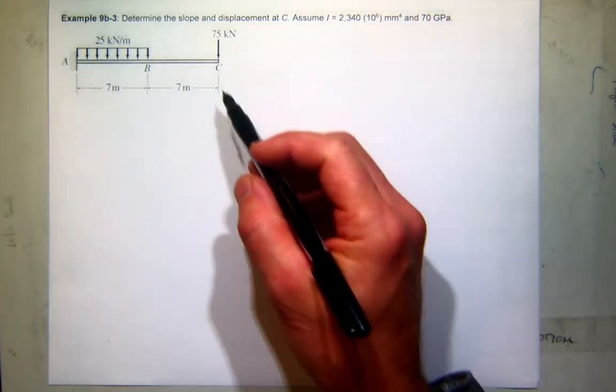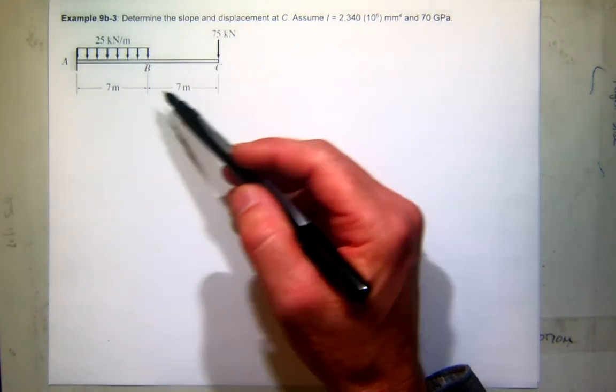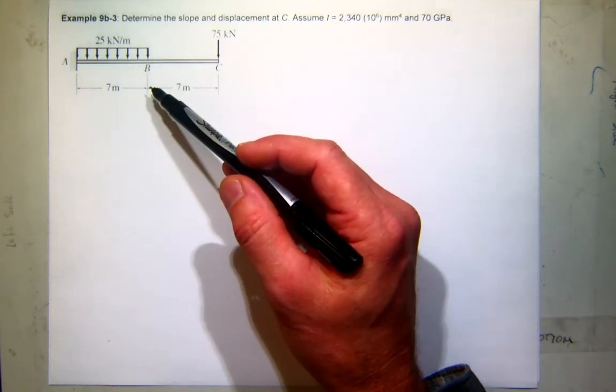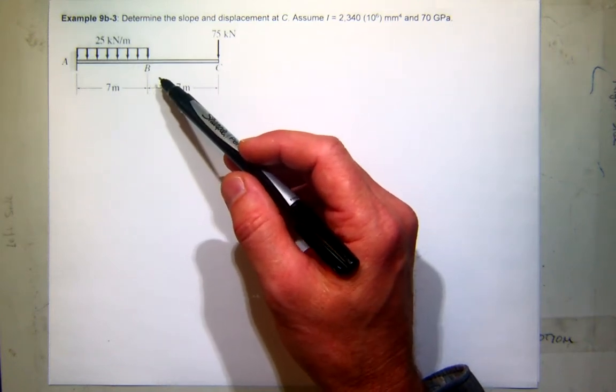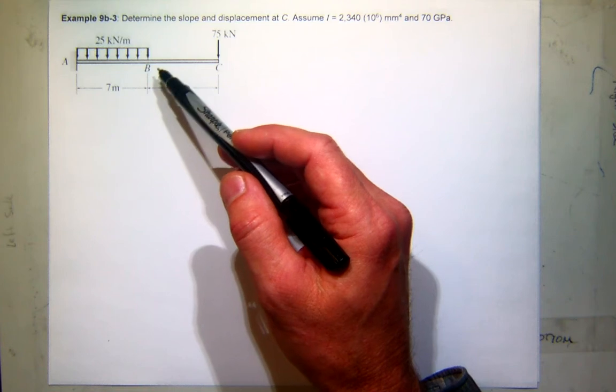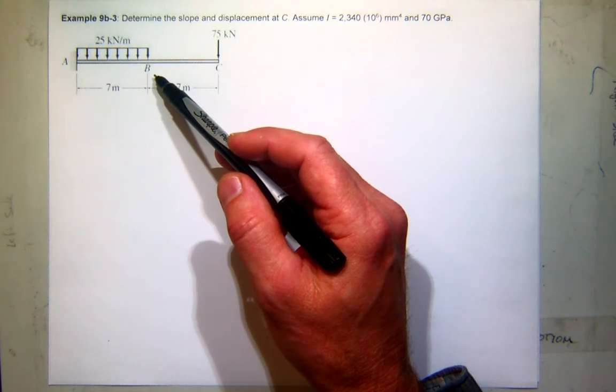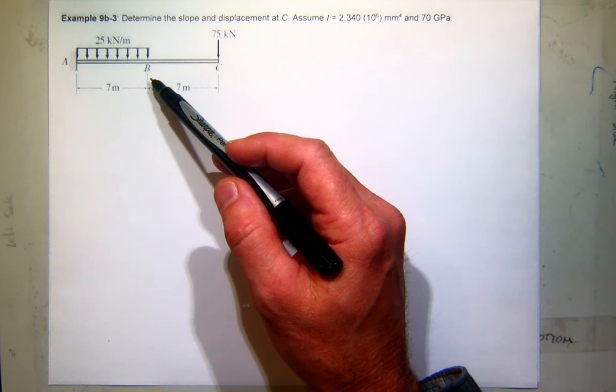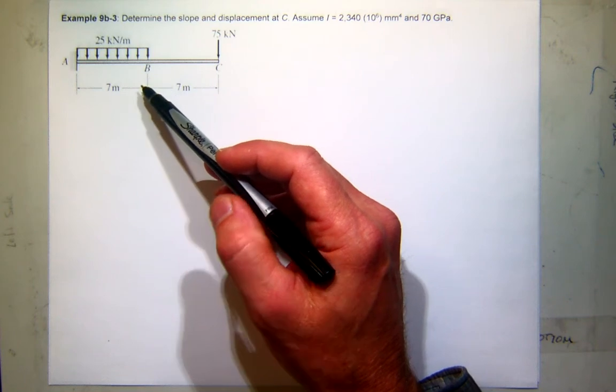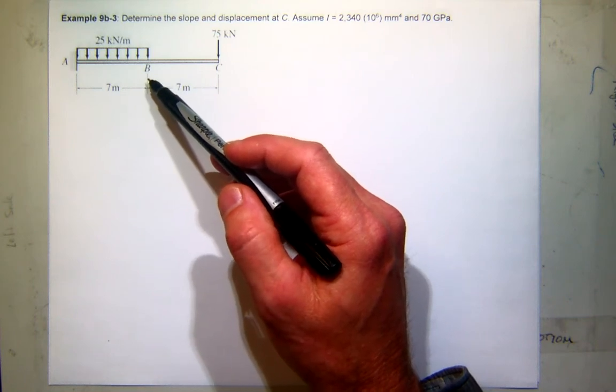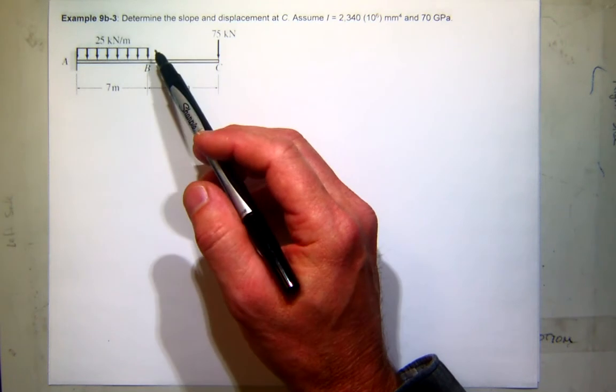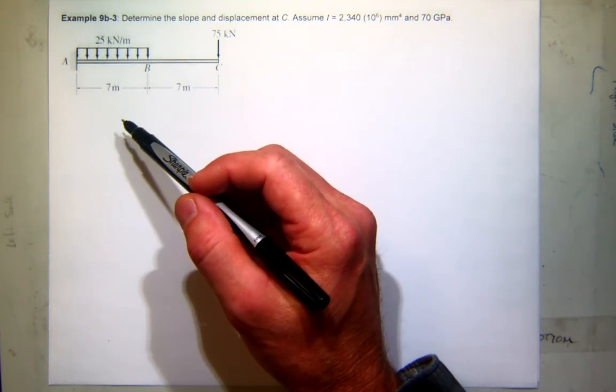Okay, so in this problem, from our previous discussion, you'll probably see that direct integration could possibly work here, but would be a challenge. Conjugate beam would also be kind of a mess, but could be done. But we're going to focus on virtual work today, and I think this is an easier problem to do with virtual work. So we'll start there.